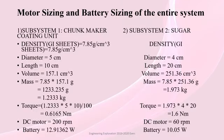Motor sizing and battery sizing of the entire system. The DC motors used are of 200 RPM and 60 RPM respectively, and the batteries used for the operation of the DC motors are of 12.9 and 10.05 watts respectively.